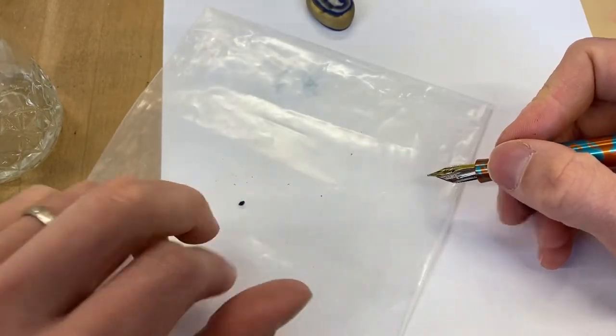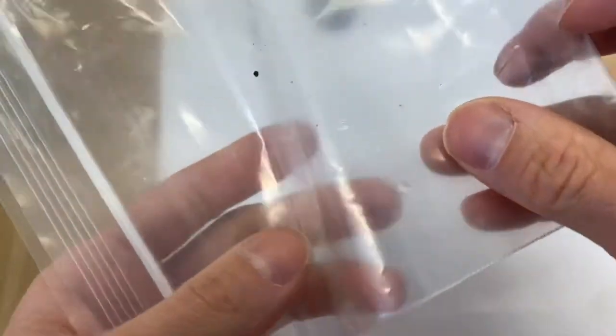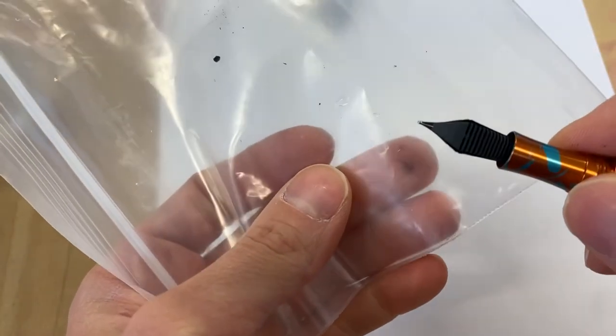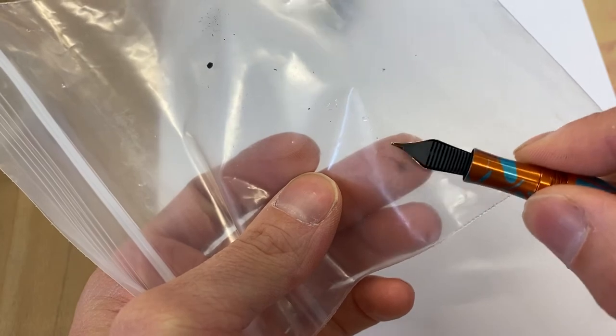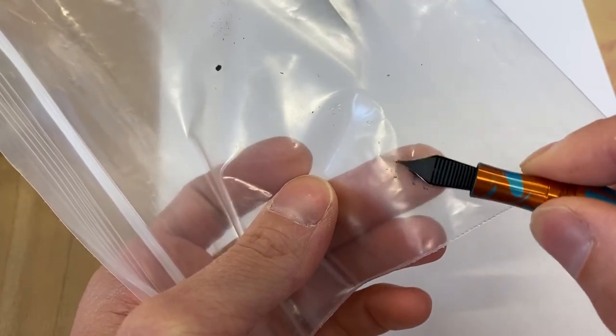And I'm going to go ahead and make that a smaller drop and I'm going to take the back of the nib and this bag—pardon, it's kind of hard to do this on video—and I'm going to wipe from that breather hole to the front of the nib.